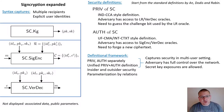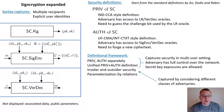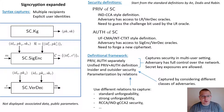We provide all security definitions in the multi-user setting, where the adversary has full control over the network and is allowed to expose users' secret keys. Our definitions allow capturing both insider and outsider security notions by considering different classes of adversaries. Finally, we parameterize all security notions by relations that determine which queries to the unsigncryption oracle are considered valid, resulting in a definitional framework where different relations allow capturing different signcryption security notions in a fine-grained way.